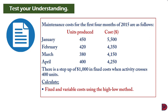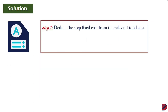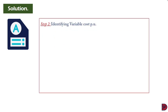We need to calculate fixed and variable cost using the high-low method. When you pick any activity level higher than 400, the fixed cost is $1,000 higher than normal. To solve it, we first deduct the step fixed cost of $1,000 from the relevant total cost. The total cost at the highest activity level was $5,500; we deduct $1,000 to get $4,500.